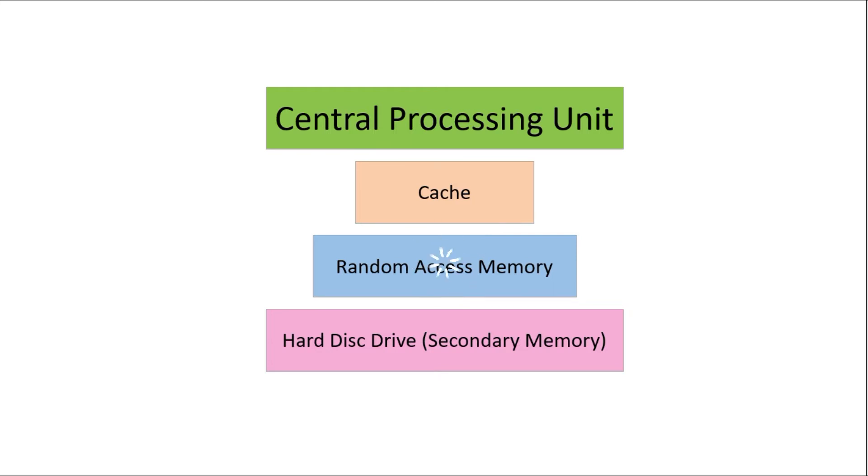The RAM is slightly further away but can hold more data at a time and this usually holds the instructions for the current program that are being run. And finally there is secondary storage and this is the furthest away and therefore the slowest to retrieve data from.